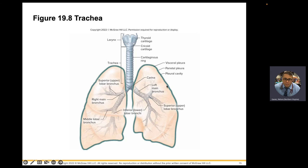The pleura is a two-layered covering of your lungs. The visceral layer is the inner layer, the parietal layer is the outer layer, and the potential space filled with serous fluid in the middle is called the pleural cavity.